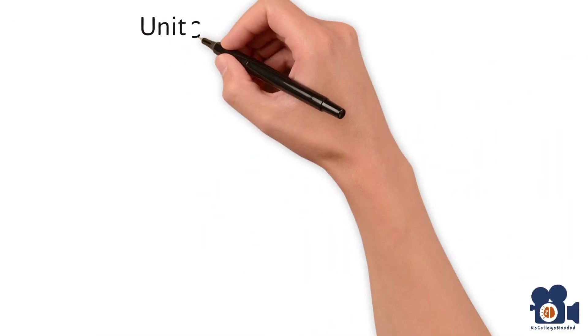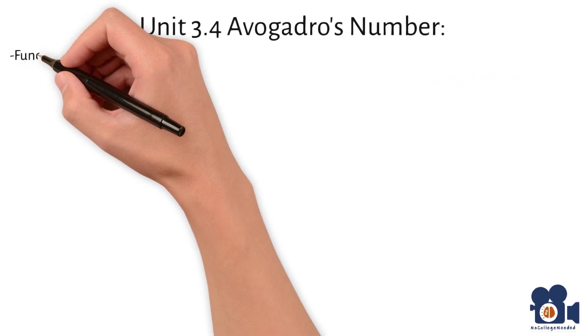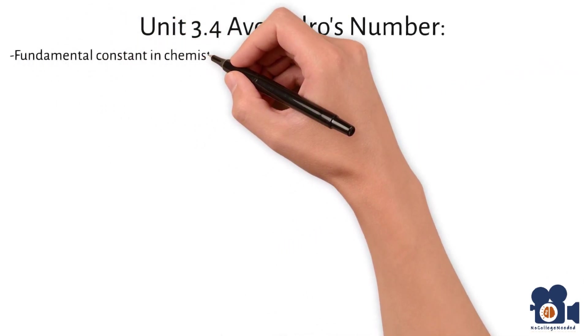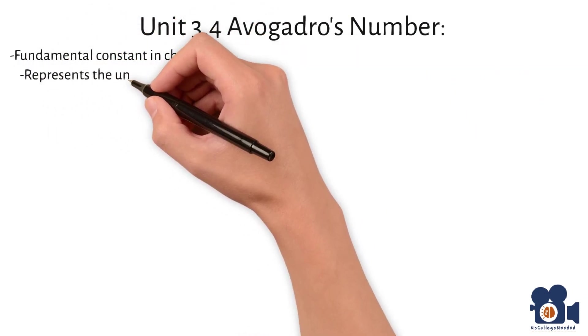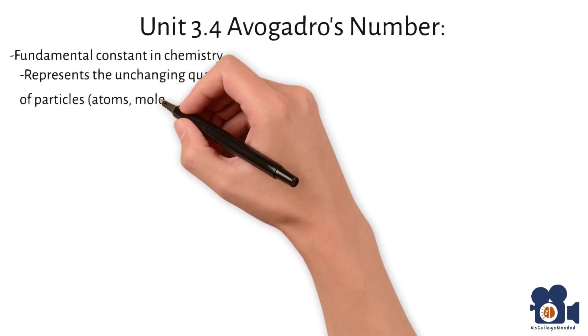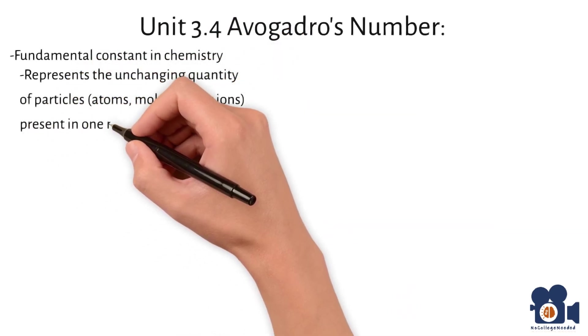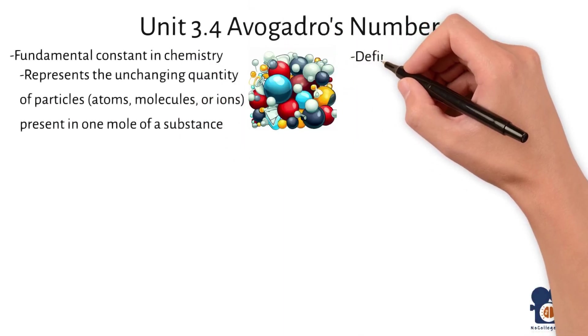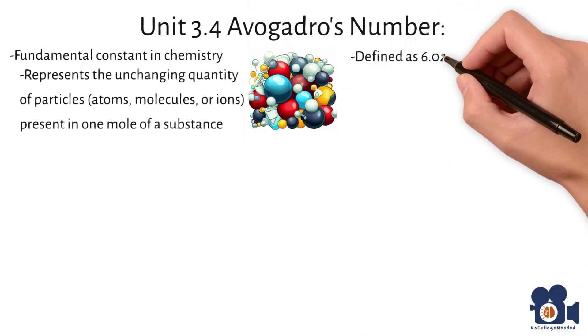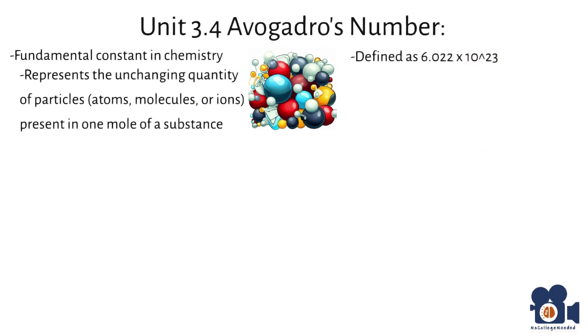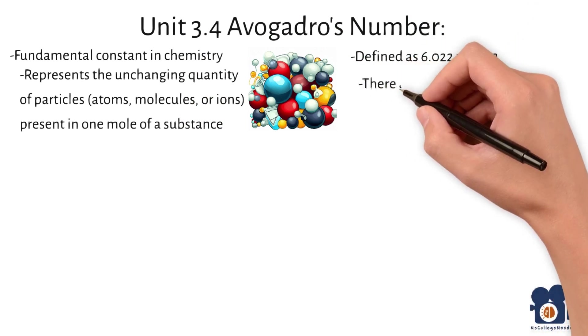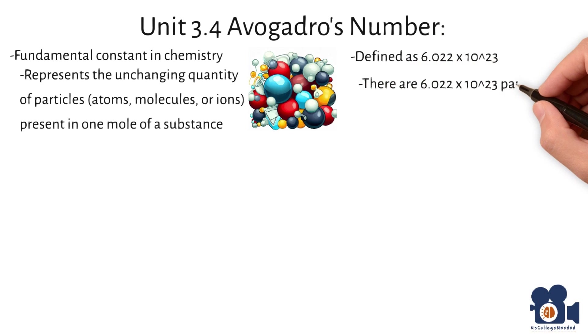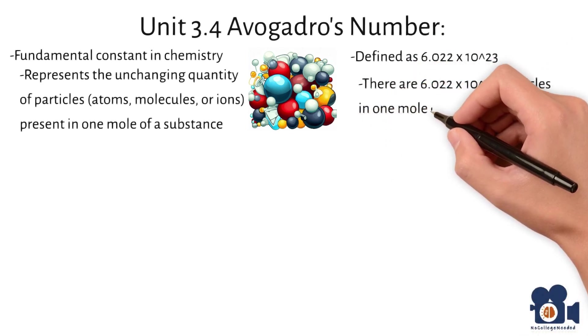Unit 3.4, Avogadro's number. Avogadro's number is a fundamental constant in chemistry that represents the unchanging quantity of particles, atoms, molecules or ions present in one mole of a substance. Avogadro's number is defined as 6.022 times 10 to the 23rd, which means that there are 6.022 times 10 to the 23rd particles in one mole of any substance.